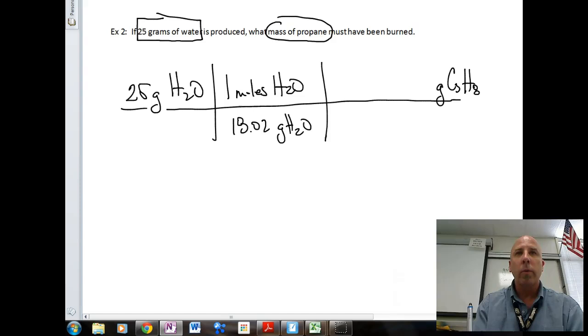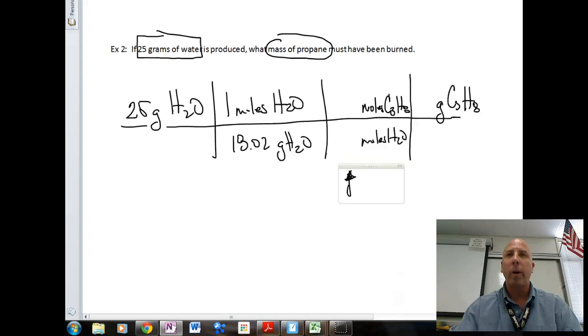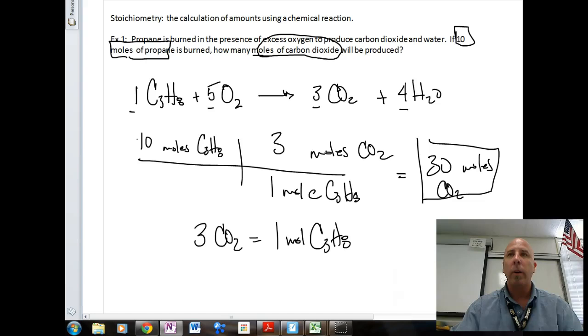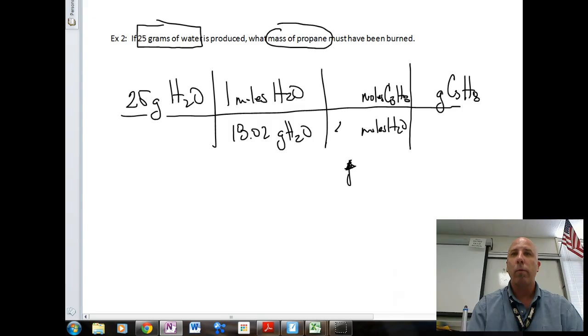The next thing we want to do is we want to convert from moles of water into moles of propane, C3H8, and moles of water. Now here we're going to use the mole ratio, the equality from the balanced equation. So I'm going to scroll back up here and look at my balanced equation. I have a four to one ratio of four waters to one propane.